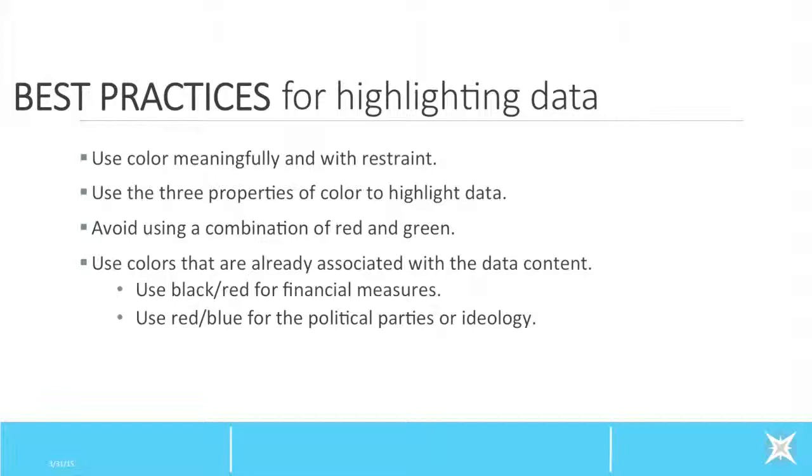Use the three properties of color. Use intensity to highlight with bright colors. Use value to highlight with a dark value on a white background or a light color on a dark background. Use hue to highlight warm hues. Avoid using combinations of red and green to guarantee that most people who are colorblind can distinguish groups of data. Lastly, use colors that are already associated with data content. For example, use black and red for financial measures and red or blue for political parties or ideology.